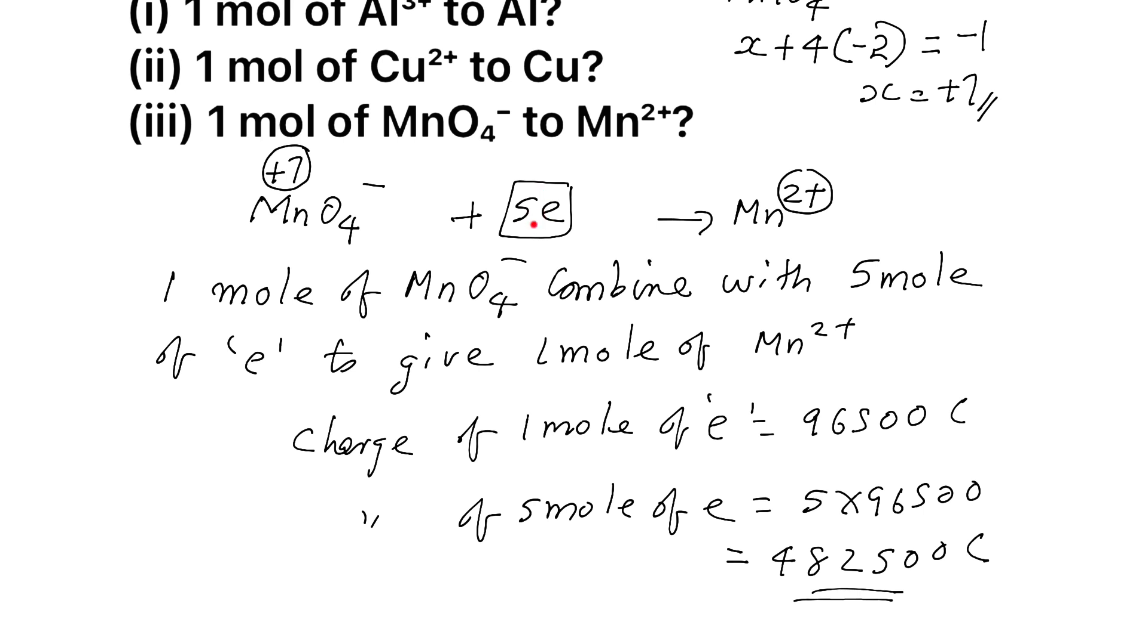Don't read this as just 5 electrons. Because question is as per mol concept, so if this is 1 mol, this will be 5 mol, and here also should be 1 mol. Like that you have to read. Hope all of you understand.